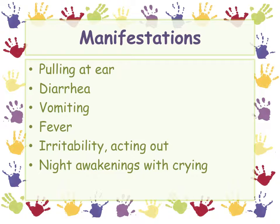With acute, they sure know it hurts. You're going to have kids pulling at their ear, diarrhea because of the stress — kids tend to have nausea and diarrhea with pretty much anything, ear infections included. Fever potentially up to 102–103. Irritability and acting out — they can't always verbalize, especially think about those one and two year olds. They can't say why they feel bad, so they're just fussy. And night awakenings with crying — this is hallmarked by ER visits at 10 or 11 at night. The child falls asleep, then wakes up screaming because lying down increases the pressure and they're no longer distracted. All of these symptoms are with acute otitis media.